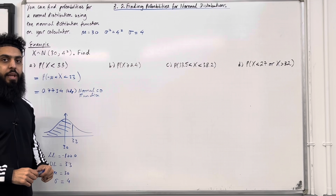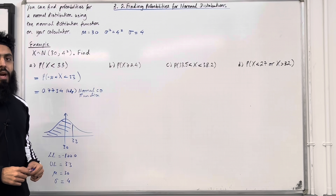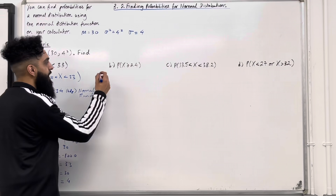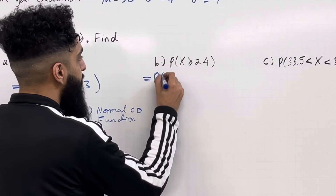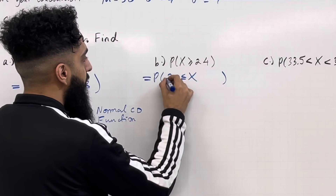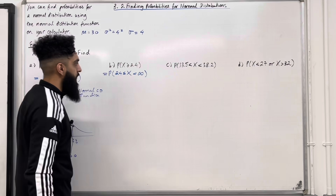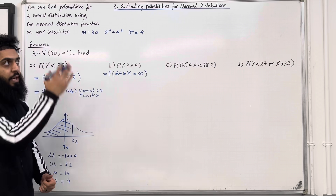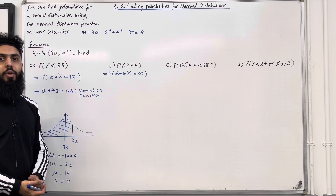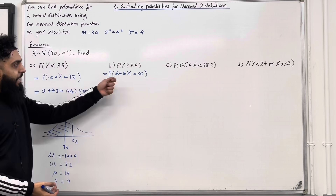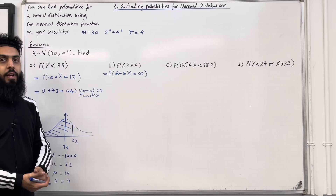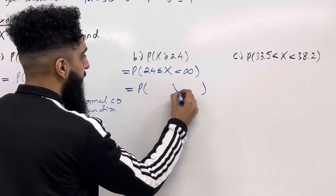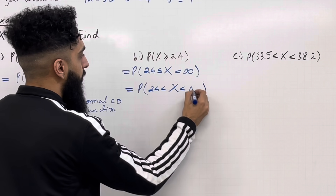Let's move on to part B: probability X is greater than or equal to 24. The first step is to rewrite this using positive infinity. For a normal distribution, X equal to 24 is a vertical straight line cutting at 24, which contributes zero area. So we can remove the equal sign — it will not influence the probability. We can rewrite this as the probability of X being greater than 24 but less than positive infinity.